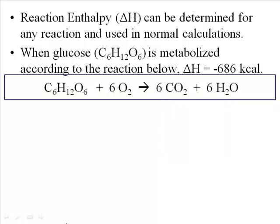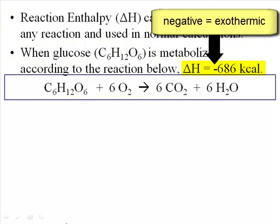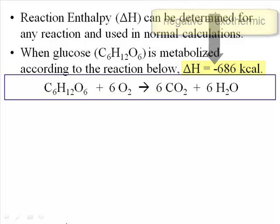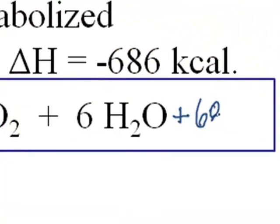The chemical reaction is: one glucose molecule reacts with six molecules of oxygen and produces six molecules of carbon dioxide and six molecules of water. Your body doesn't do this just to produce carbon dioxide and water — it does this because metabolism also releases energy. When we look at this information, the delta H of the reaction is negative, which indicates this is an exothermic reaction. The negative 686 kilocalories means that 686 kilocalories of energy are released during this reaction, and we can write that into the equation as a product.